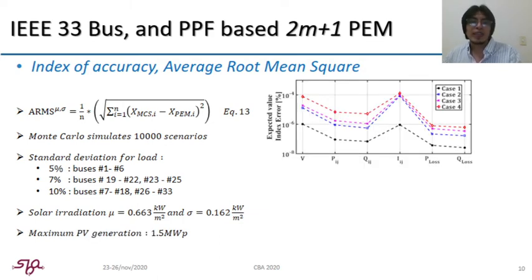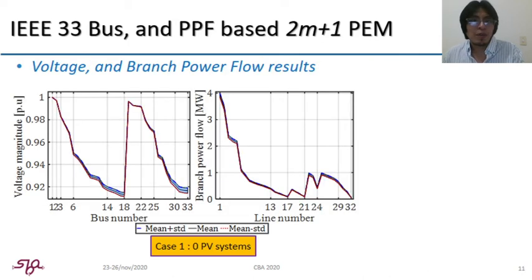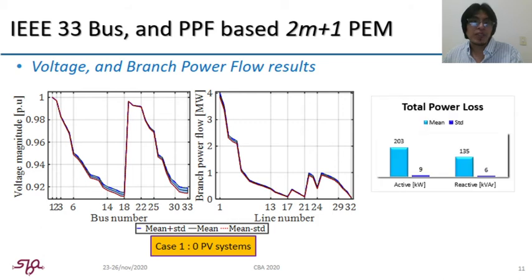So, regarding index of accuracy, it can be observed that the method presents a good degree of accuracy by small errors for expected and standard deviation values along voltages, active and reactive power flows, current, active and reactive power losses. For the coming results, it will be observed how PV power injection impacts on the behavior of state variables. For instance, case one presents voltages below minimum value of 0.95 per unit along its profile and subtle standard deviation for both voltages and power flow. It is also presented power loss values.